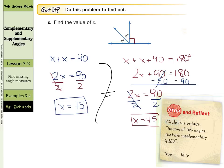Now, as we stop and reflect for just a moment, circle true or false, the sum of two angles that are supplementary is 180 degrees. Well, yeah, that's true.